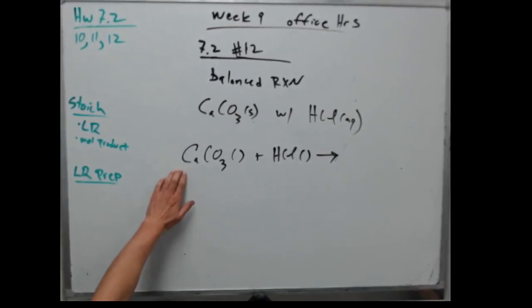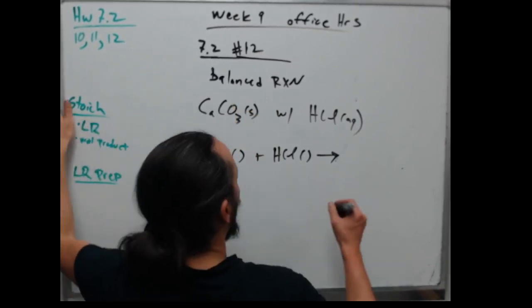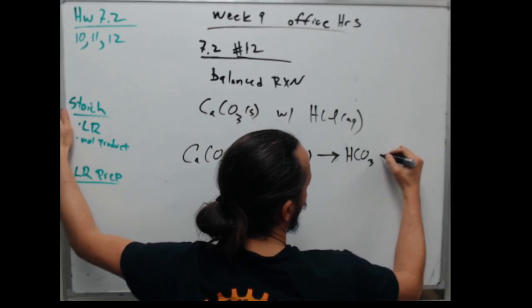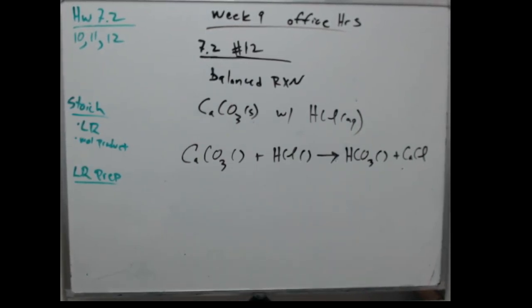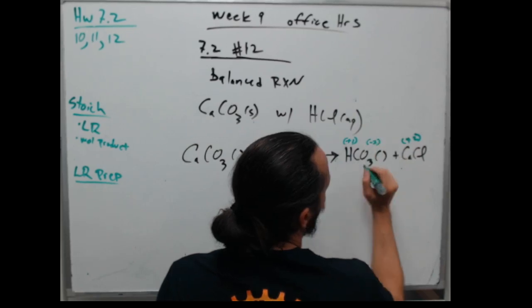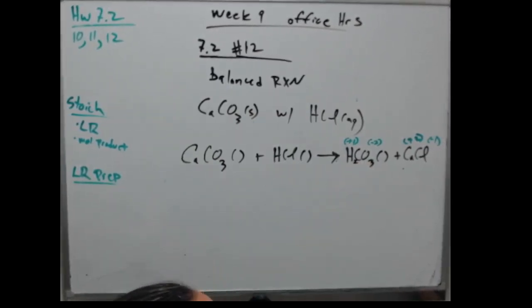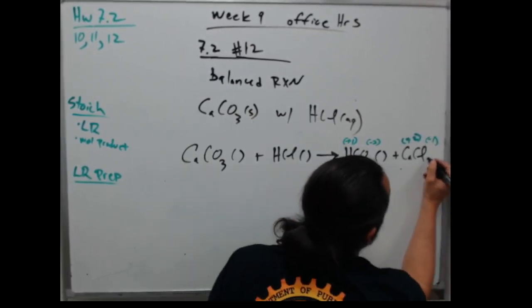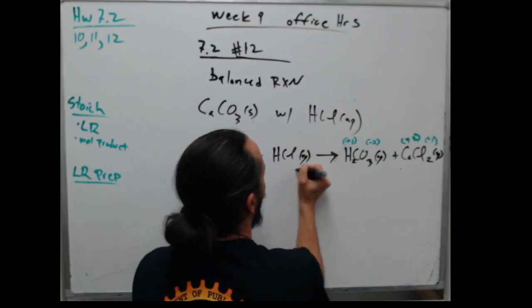Charge-balancing gives me H2CO3 and CaCl2. Checking solubility rules: H2CO3 is aqueous, CaCl2 is aqueous, CaCO3 could be listed as solid or aqueous depending on context. I'd tend to list it as aqueous since the reaction occurs in the aqueous state, not in the state of the material we dump in. When writing balanced chemical reactions, we put things in the state where the reaction is actually occurring.